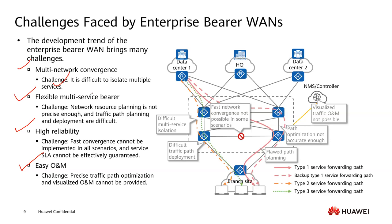Now let's look at the challenges. For multi-network convergence, isolating multiple services is difficult — deploying MPLS VPN takes time and requires configuration, especially with many branches. For flexible multi-service WAN, network resource planning is not precise enough and traffic path planning is difficult. Using MPLS LDP may cause congestion, and using TE makes configuration complex.